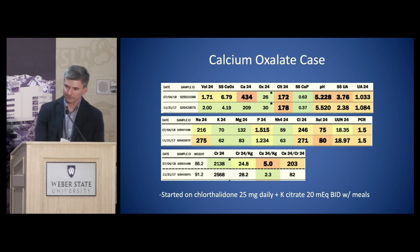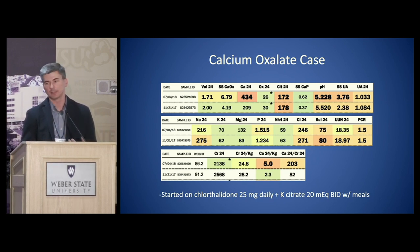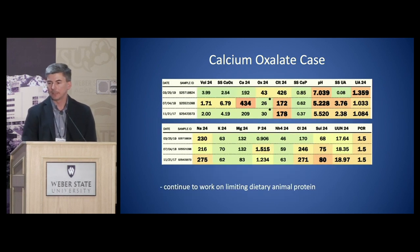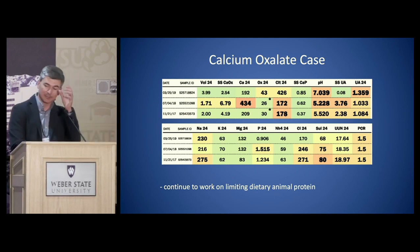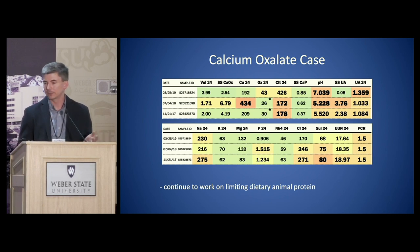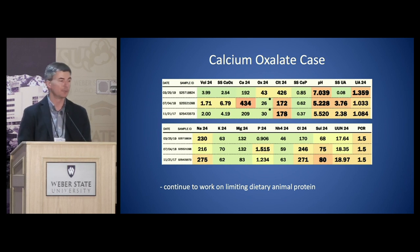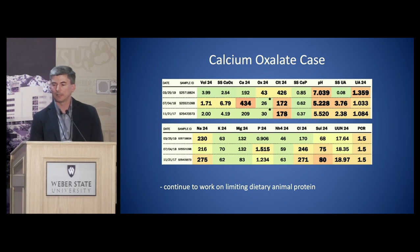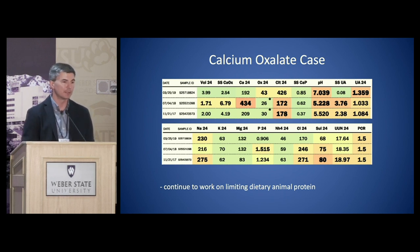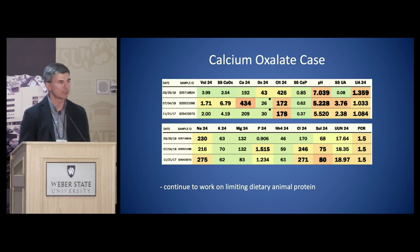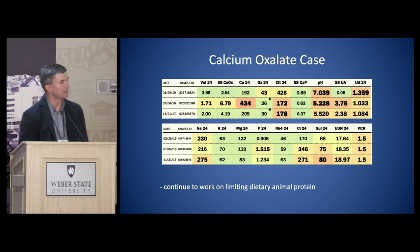Going back to the case — after counseling on diet with no improvement, I started him on chlorthalidone and potassium citrate. On follow-up, his urine output increased to 3.9 liters, he had a reduction in urine calcium, his oxalate did go up, citrate went up because he's on potassium citrate, and his urine pH went up as expected. He's still eating a lot of meat — his uric acid went up — and still has high sodium in his diet, so there are still issues to address. But most importantly, his supersaturation score for calcium oxalate — his stone type — has decreased considerably. Presumably this patient is in a better place than when he started.